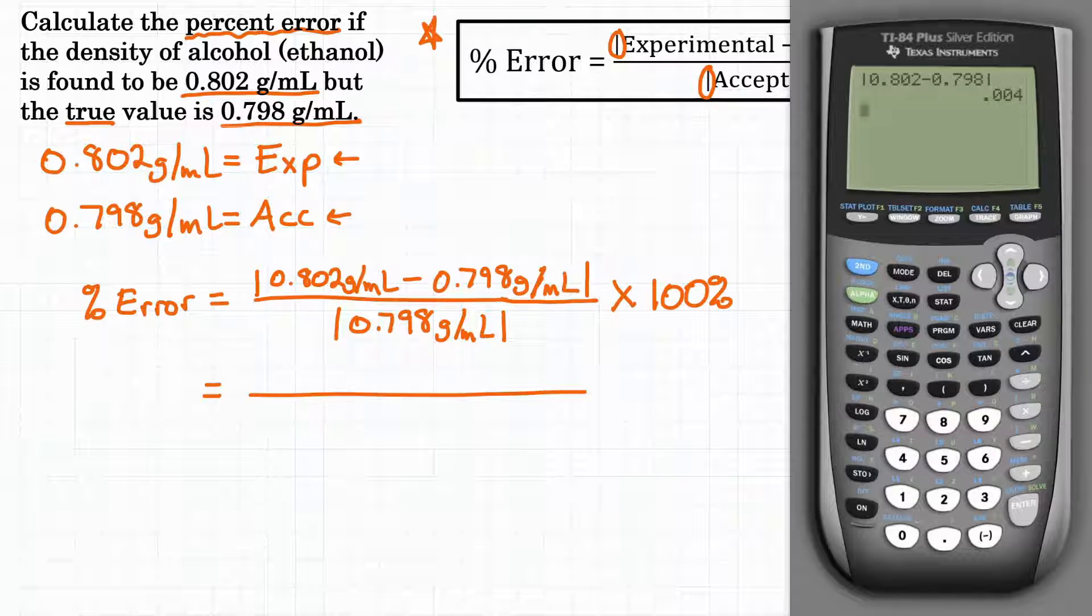Now sometimes the formula has the top switched where it actually has your accepted value minus your experimental. And you can do it that way as well. Just remember your absolute value bars. If it's negative you need to take the positive.